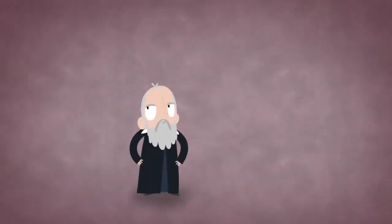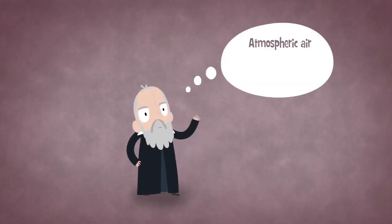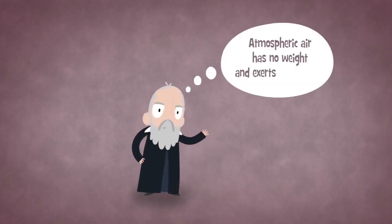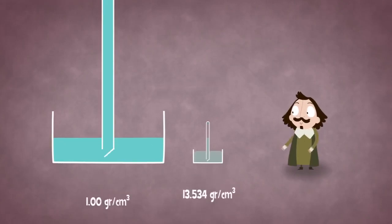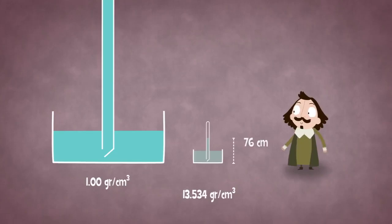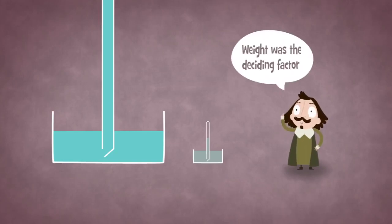This idea was not easily accepted, as Galileo and others had traditionally thought that atmospheric air has no weight and exerts no pressure. Torricelli decided to repeat Berti's experiment with mercury instead of water. Because mercury was denser, it fell farther than the water, and the mercury column stood only about 76 centimeters tall. Not only did this allow Torricelli to make the instrument much more compact, it supported his idea that weight was the deciding factor.